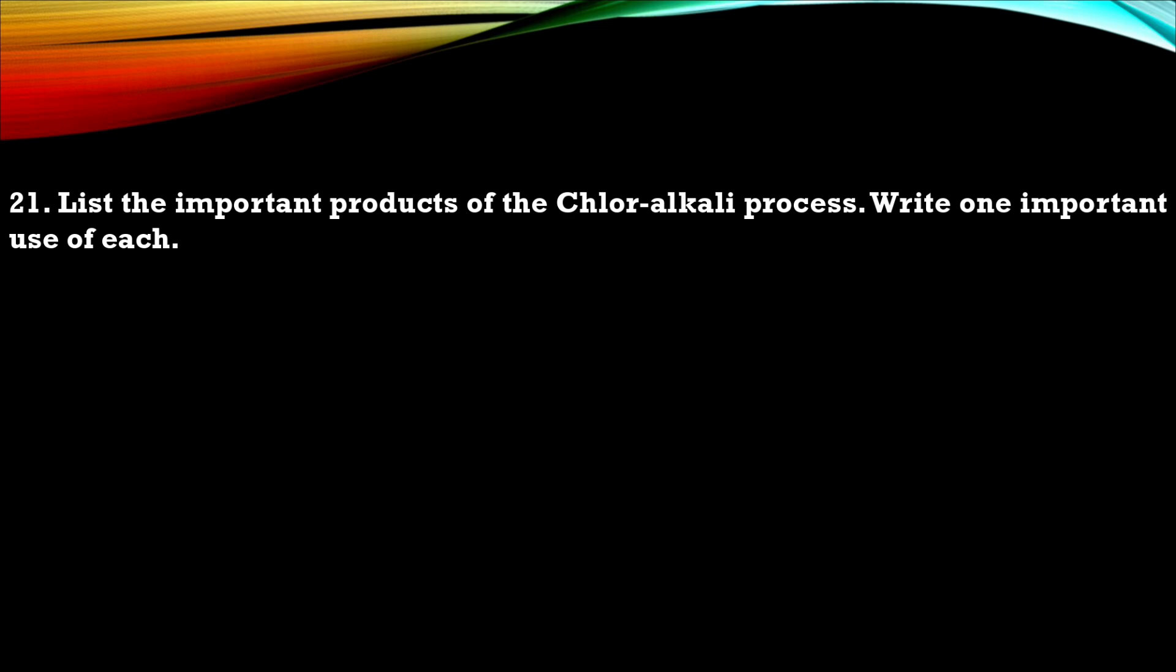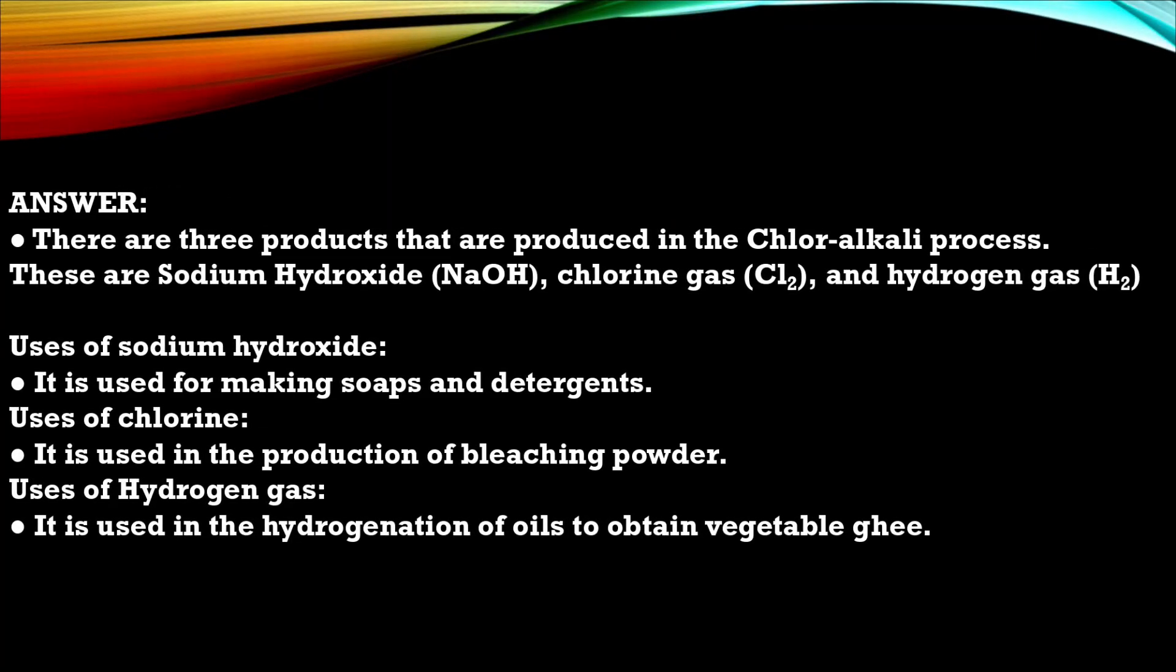Question 21. List the important product of chlor-alkali process. Write one important use of each. So here is the answer. All the uses of sodium hydroxide, chlorine and hydrogen gas.